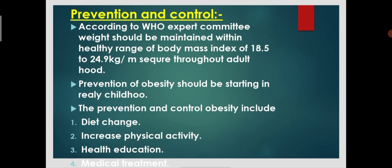The next is prevention and control. According to the WHO expert committee, weight should be maintained within a healthy range of body mass index 18.5 to 24.9 kg/m² for adults. Prevention of obesity should start in early childhood, maintaining a healthy diet from the beginning.